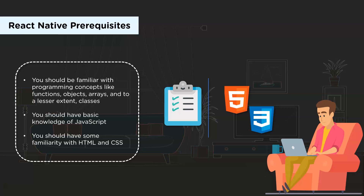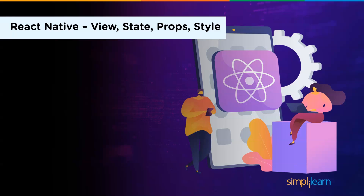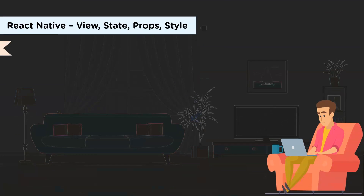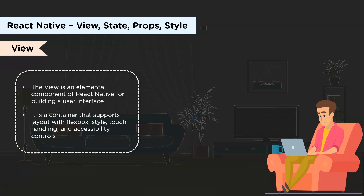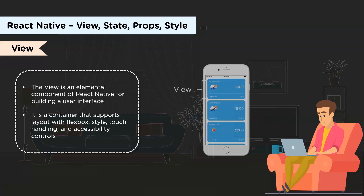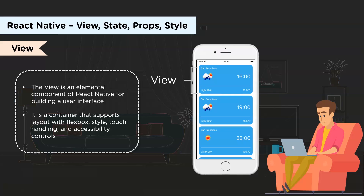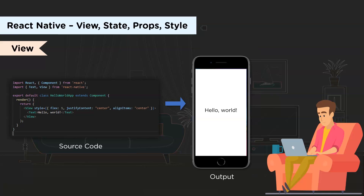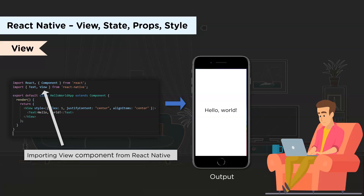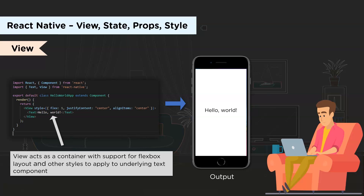Now let's look at the basic concepts like view, state, props, and styling in React Native. View is the most fundamental component of building a UI. It is a container that supports layout with flexbox, style, some touch handling, and accessibility controls. View maps directly to the native view equivalent on whatever platform React Native is running on. Here you can see a simple code snippet with a Hello World message in a render method, being rendered using the view component imported from React Native. View acts as a container with support for flexbox layout and other styles, and flexbox is designed to provide a consistent layout on different screen sizes.